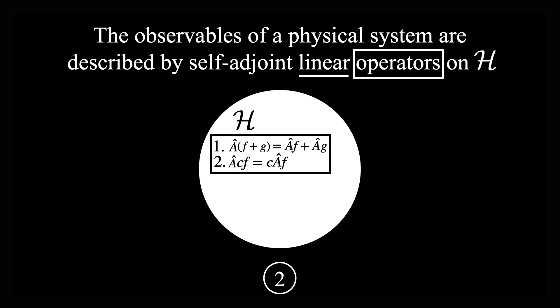Okay, that's simple enough, but now what in the world does it mean for a linear operator to be self-adjoint? To answer this, we need to introduce the adjoint of an operator. An adjoint of an operator A is defined as the operator A dagger with the following property. If you apply A to F and take the inner product with G, this is equal to applying the adjoint of A to G, and then taking the inner product with F. So the adjoint of A is the operator that satisfies this equation.